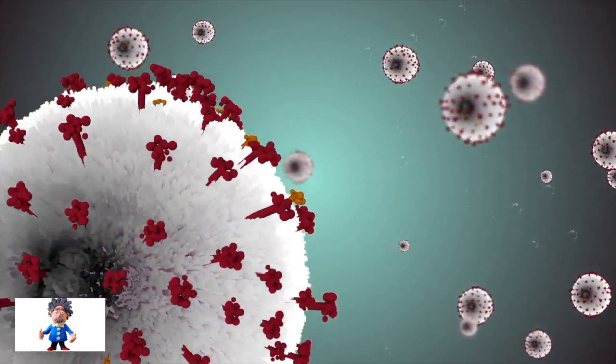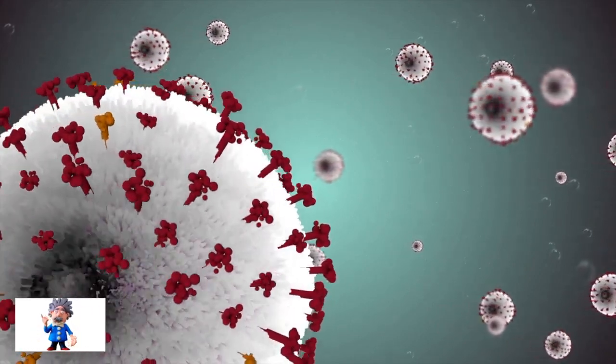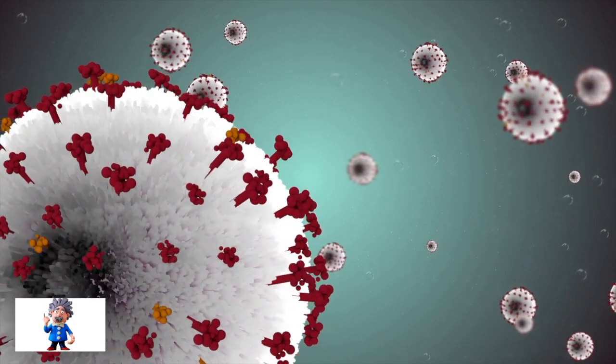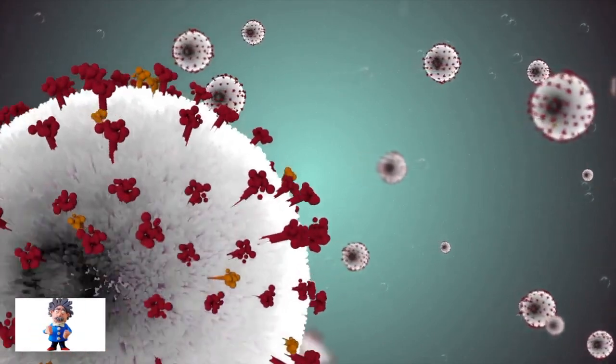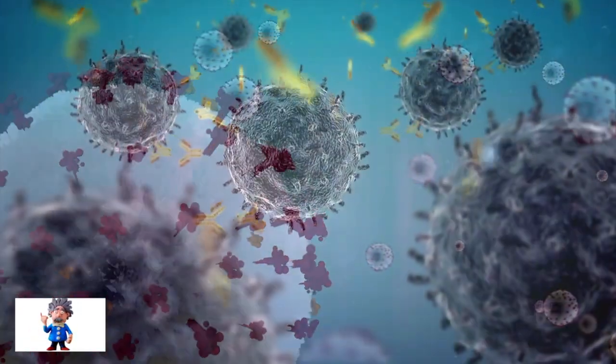Effectively, the 30 mutations discovered in the Omicron variant will change the shape of the spike protein, making it harder to detect by the immune response which the vaccines have induced.